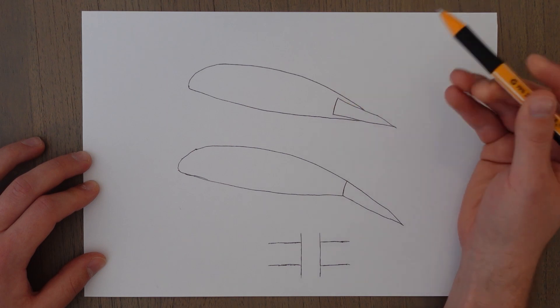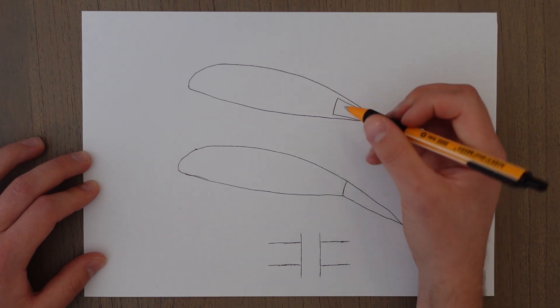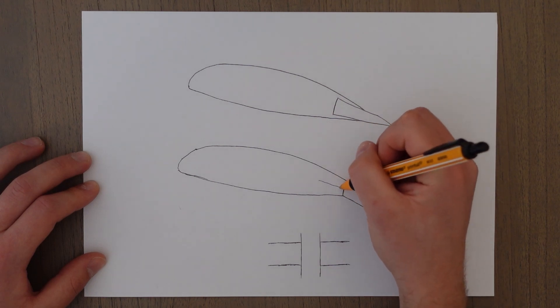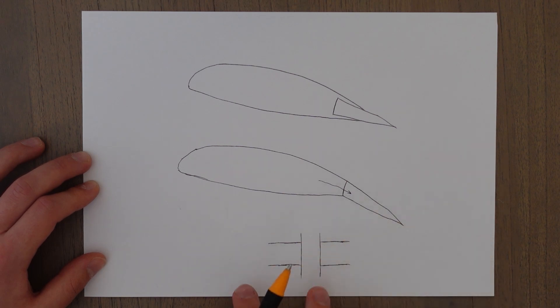This would be the flaps in situation. So you can see the actual flap is housed inside the aerofoil itself, and then it will run along tracks and extend out and down.